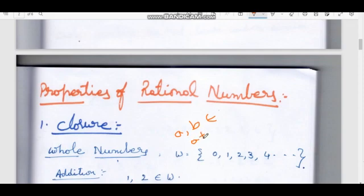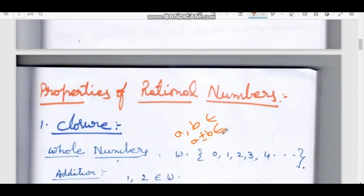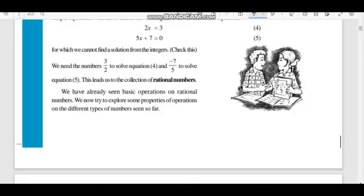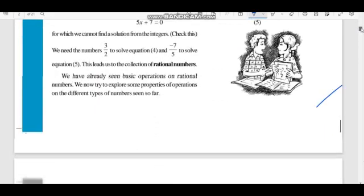A property of whole numbers, natural numbers, integers, and rational numbers is that they satisfy the four binary operations: addition, subtraction, multiplication, and division. I will show you the concept from the textbook and the details of the notes prepared.